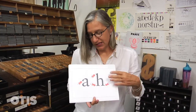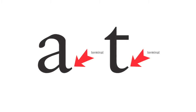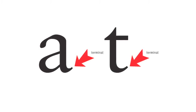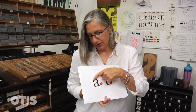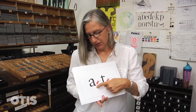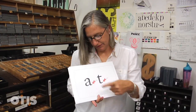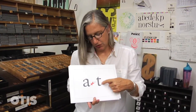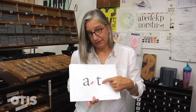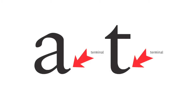If a stroke comes to an end and there is no serif, that is called a terminal. So as you can see, we've got our serif up there — stroke continues, ends, no serif. Stroke, no serif — terminal.